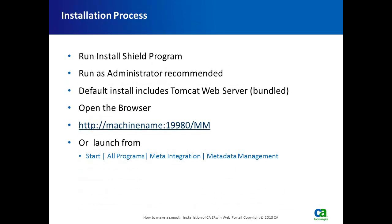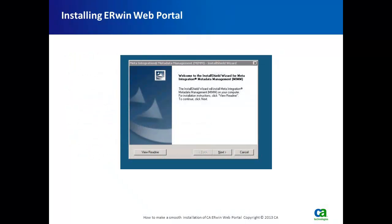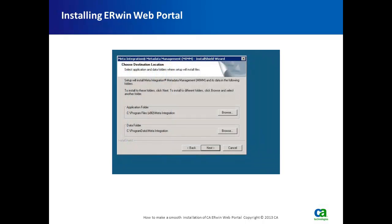Now let's start the installation process. Go to the executable file of the CAA Erwin Web Portal, right-click, and run as administrator. This will install the default bundled Tomcat web server and the web application itself. On the first screen, click Next. This shows the default installation folder — Program Files, Meta Integration — and the data folders. You may change it as you wish.